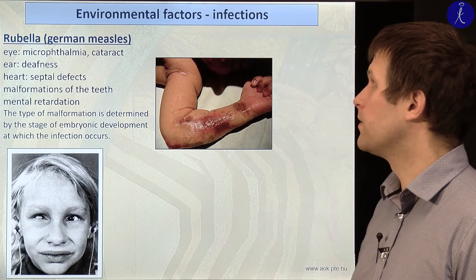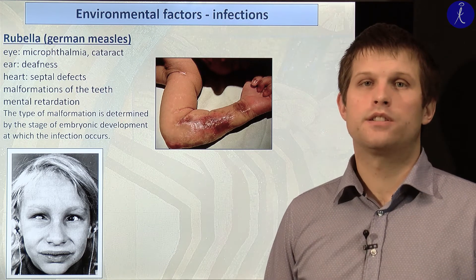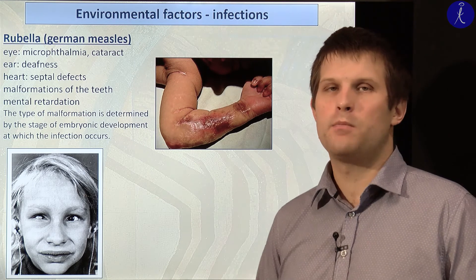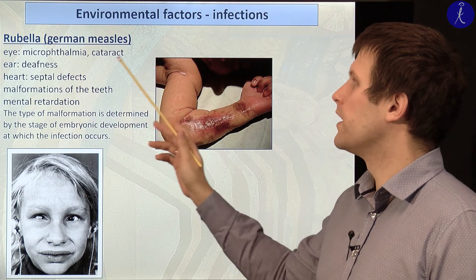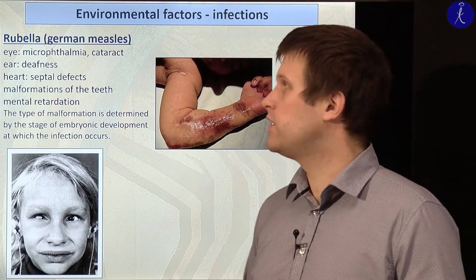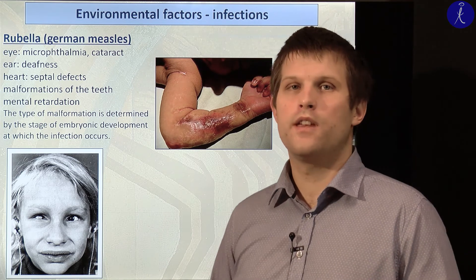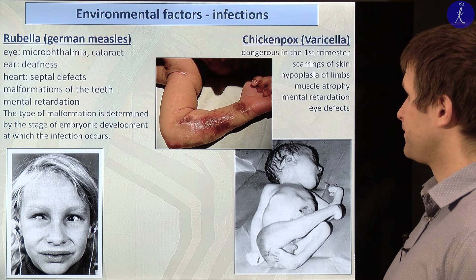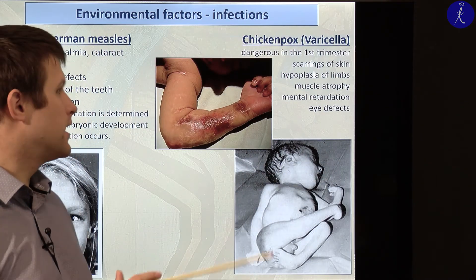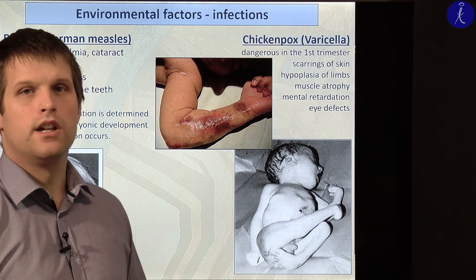Crucial environmental factors: German measles — rubella — is extremely dangerous. The effects depend on the stage of embryonic development. If early, we could find microphthalmia, cataract, and loss of vision. Later we can see deafness, septal defects of the heart, malformation of the teeth, and mental retardation. Chickenpox or varicella is also dangerous, especially in the first trimester of pregnancy — it can result in scarring of the skin, hypoplastic or smaller limbs, mental retardation, and eye defects.